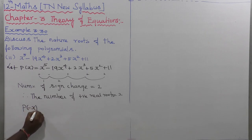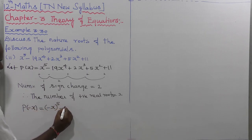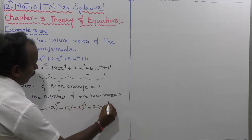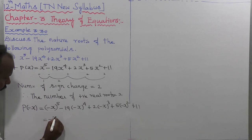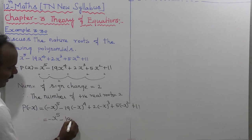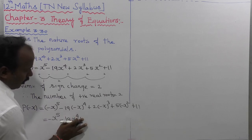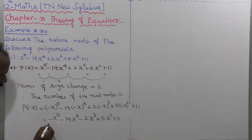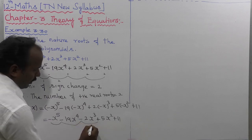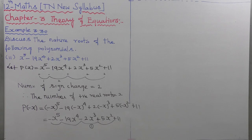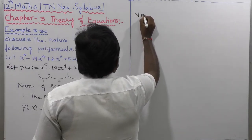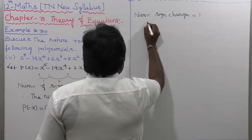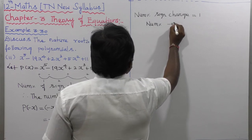Next, to find out P of minus x: equal to minus x whole power 5, minus 19 into minus x whole power 4, plus 2 into minus x whole power 3, plus 5 into minus x whole square, plus 11. This gives minus x power 5 minus 19 x power 4 minus 2 x power 3 plus 5 x square plus 11. One sign change, then next one plus — one sign change. Number of sign change equal to 1.